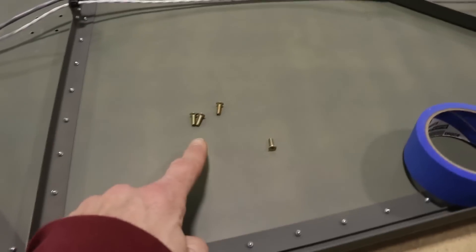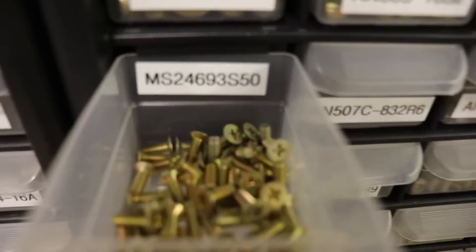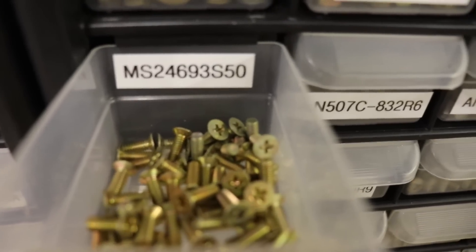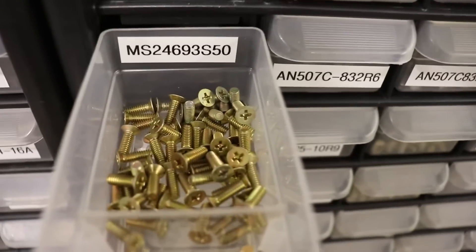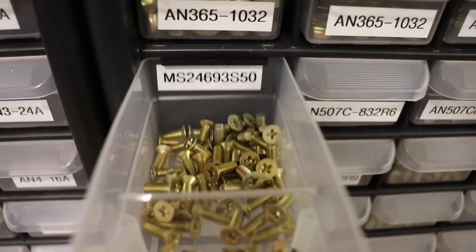Anyway, that was super easy. If you want to know what screws I use, there they are: MS24693S50 would be the longer ones. These are just shorter ones. Those are a little bit longer. So the five zeros are the ones I use. You can get them from any aviation hardware place.